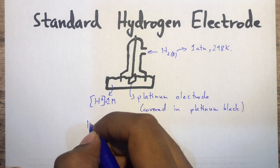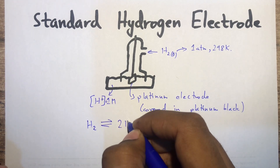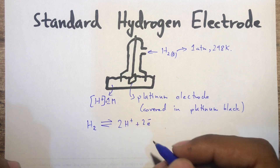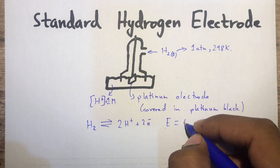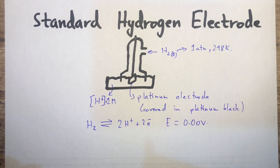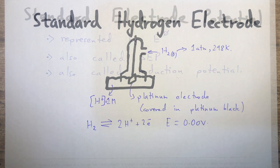The equation for the standard hydrogen electrode is: 2H⁺ + 2e⁻ ⇌ H₂, and the E° value is 0.00 volts. This is why the standard hydrogen electrode is used as a reference electrode for all calculations. Next, we'll look at the concept of the standard electrode potential.